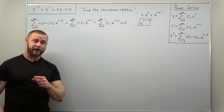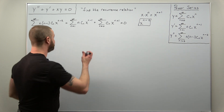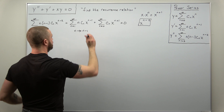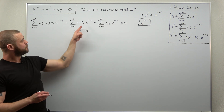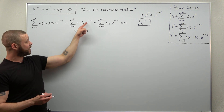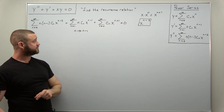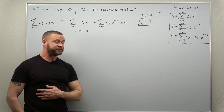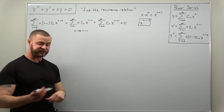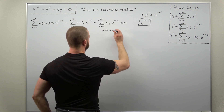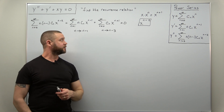We're going to shift to x to the n minus two, so we just have to rewrite two power series. For the second power series, when we shift to get x to the n minus two, we replace n with n minus one. Always check your exponents: n minus one minus one does give n minus two. For the third power series, to get x to the n minus two, we replace n with n minus three — and checking: n minus three plus one simplifies to n minus two.